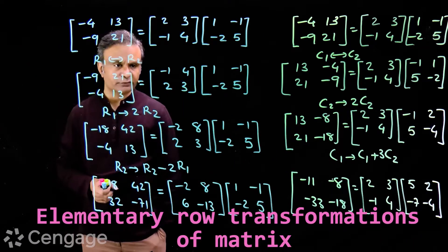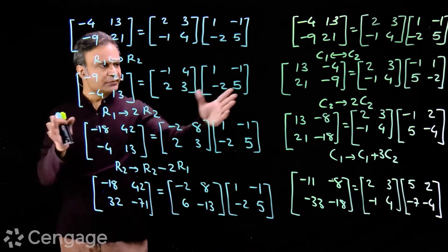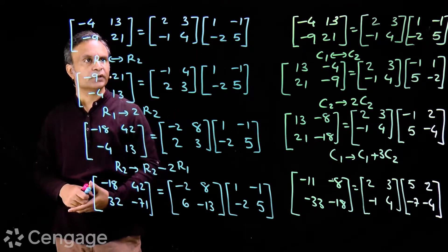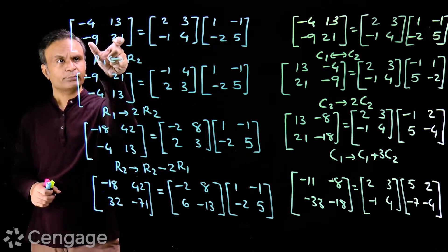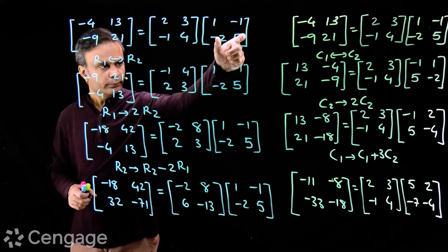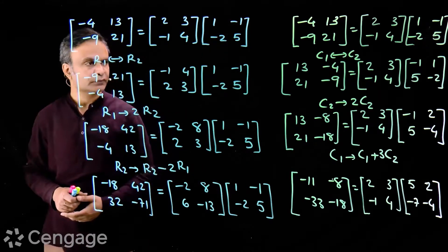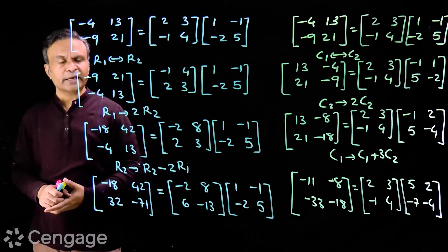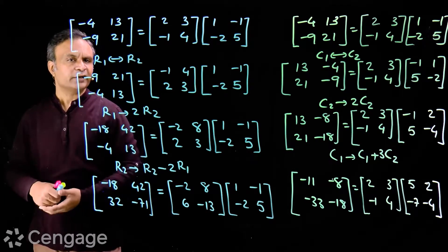Hello students. In this video we will study one very interesting and magical thing about the product of matrices. Here I have some calculations. First consider this column of calculations — I have the product of two square matrices of order 2 and their product matrix. Now I keep the post-multiplier matrix intact and I am transforming these two matrices simultaneously using some elementary operations.